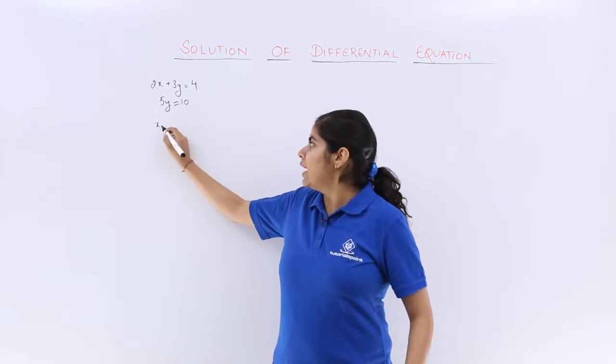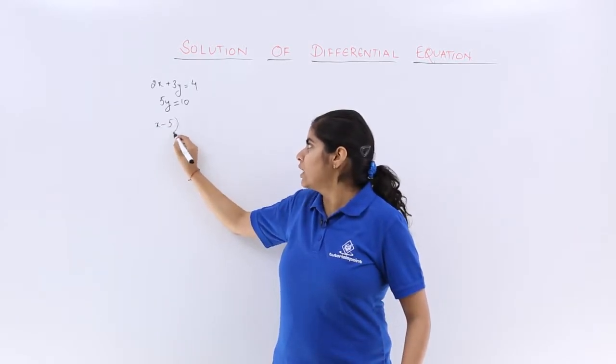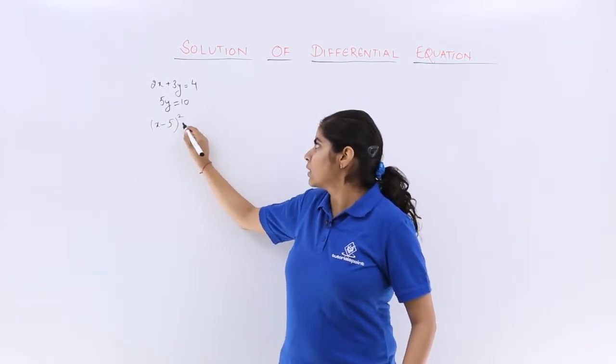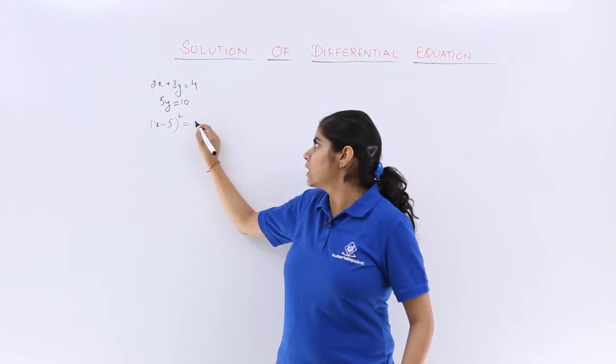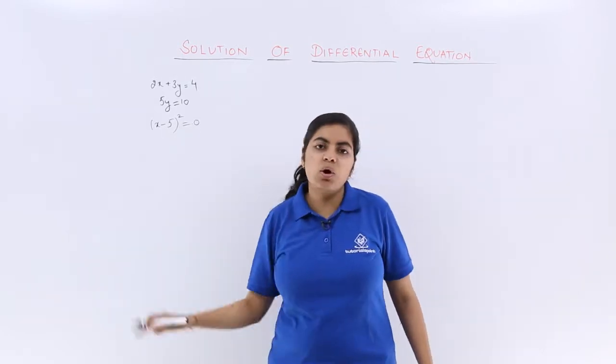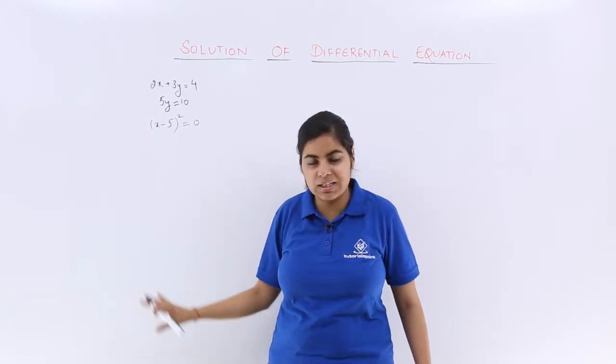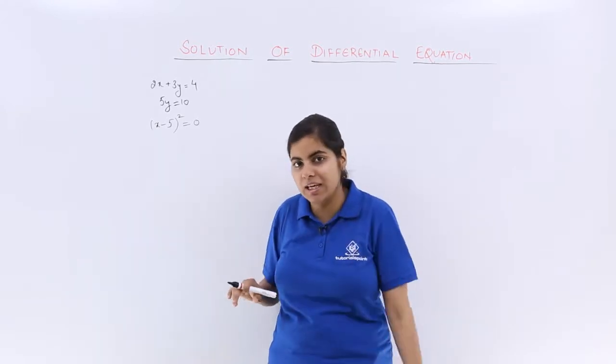Similarly, if you have x minus 5 whole square is equal to 0, how do you get the solution for this? You know how to compute it. This is a quadratic equation in one variable.